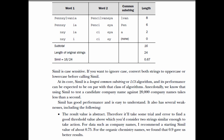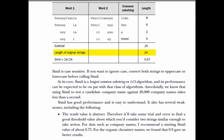Then it continues recursively looking at the substrings that are left, on the left-hand side and on the right-hand side, trying to find common substrings again. It finds 'pen' for a length of 6, and 'A' on the right-hand side for a length of 2. Then what's left has no more similarities, so the algorithm stops. We have a subtotal of 16 characters in common out of a total length of 24, therefore Simul gives 16 divided by 24, which is 0.67.